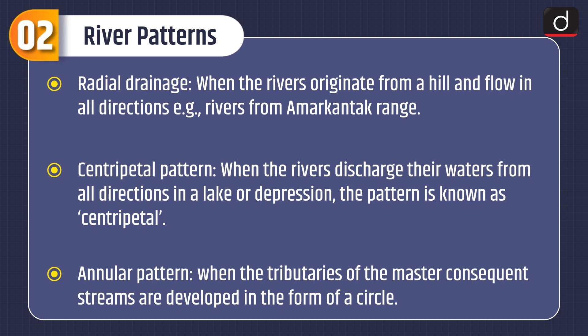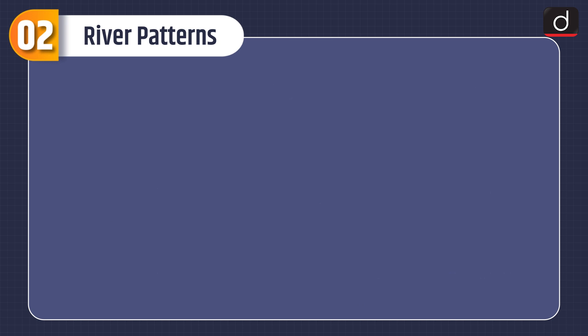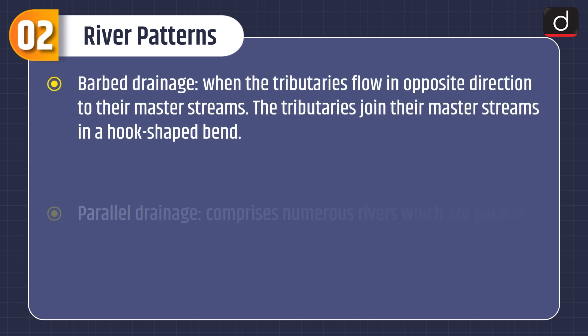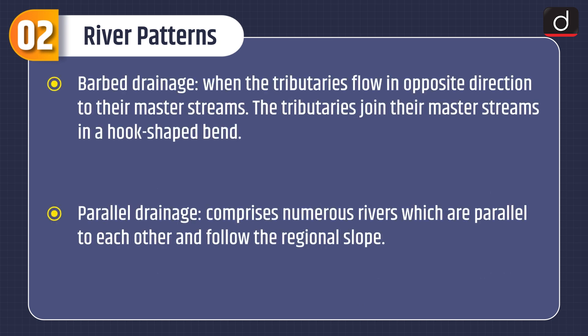In the annular pattern, the tributaries of the master consequent streams are developed in the form of a circle. Barbed drainage is when tributaries flow in the opposite direction to their master streams and join them in a hook-shaped bend. Parallel drainage comprises numerous rivers that are parallel to each other and follow the regional slope.